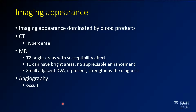The imaging appearance is dominated by blood products. On CT you can have hyperdensity; on MR you have centrally T2 bright areas with surrounding areas of darkness or susceptibility. When you have solitary cavernous malformations, they're often associated with DVAs, or developmental venous anomalies — if you see that, it strengthens your confidence that you're looking at a cavernous malformation.